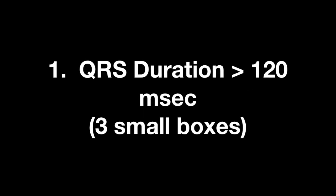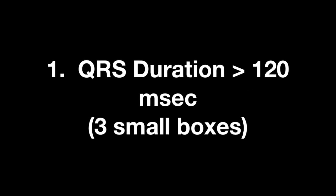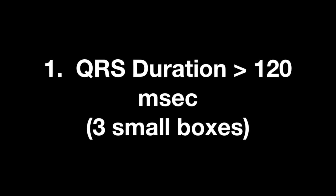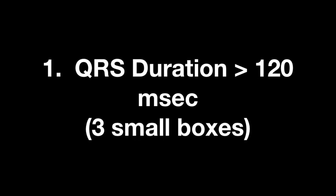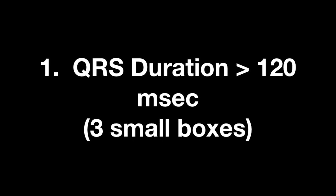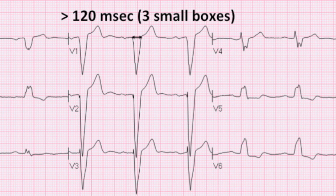The first criteria is that the QRS duration must be greater than 120 milliseconds, or three small boxes. This shows you on our ECG that the QRS duration is greater than 120 milliseconds. On this EKG, the QRS is probably about 140 milliseconds.